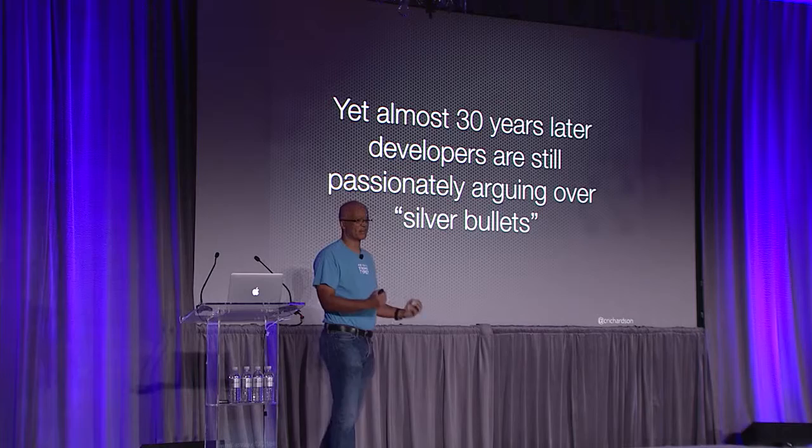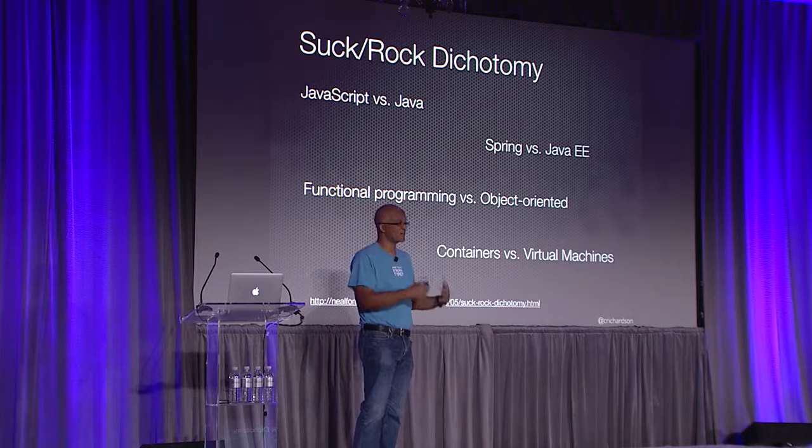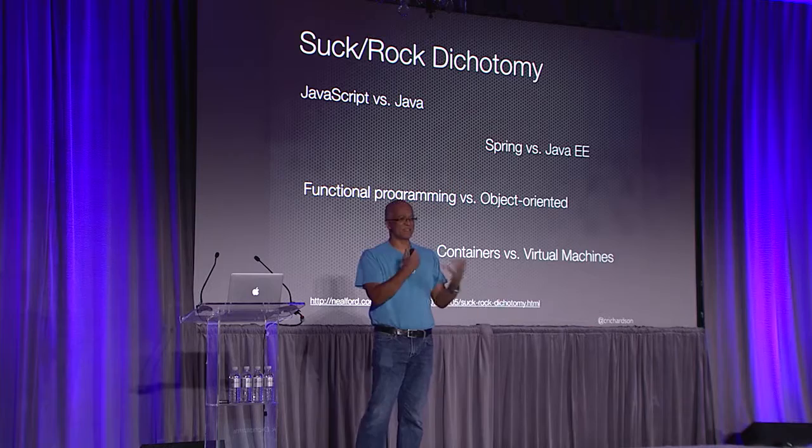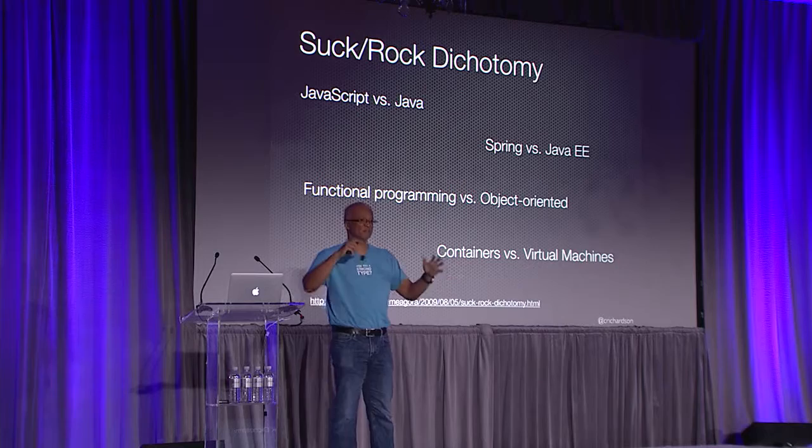About 30 years ago, famous computer scientist Fred Brooks — Mythical Man Month and all that — said that in software engineering there's no silver bullet: no technology that, if we adopt it, will give us a 10x boost in performance. That was 1986. Yet 30 years later, developers are still passionately arguing over silver bullets, very firmly believing that their favorite technology is awesome and some other technology kind of sucks.